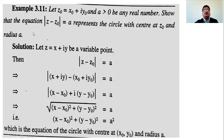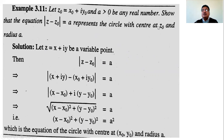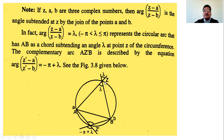Next example: given z0 = x0 + iy0 and a > 0 is a real number, show that |z - z0| = a represents a circle with center z0 and radius a. Let z = x + iy. Then z - z0 = (x - x0) + i(y - y0), and its modulus is √((x - x0)² + (y - y0)²) = a. Squaring: (x - x0)² + (y - y0)² = a², which is the equation of a circle with center (x0, y0) and radius a.